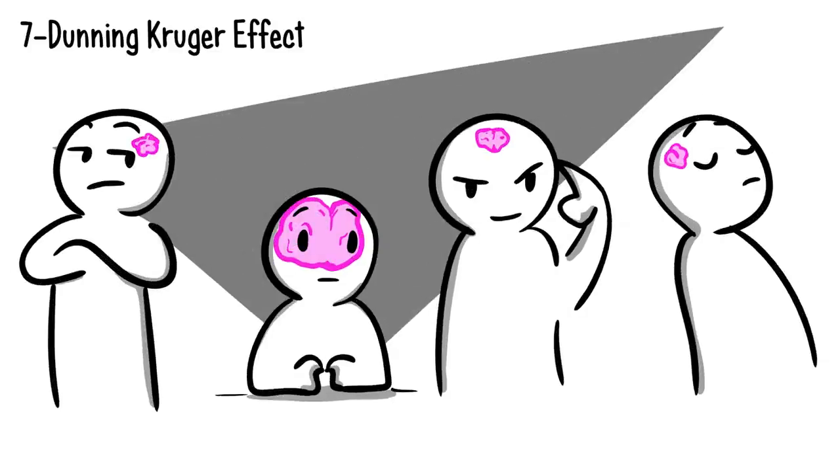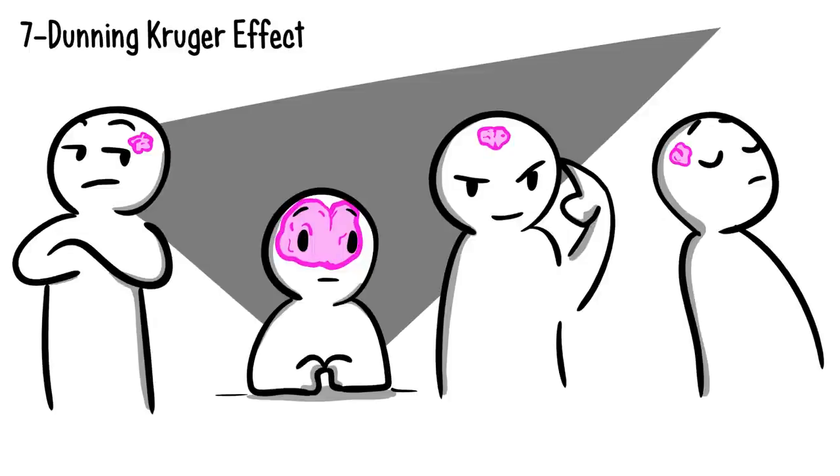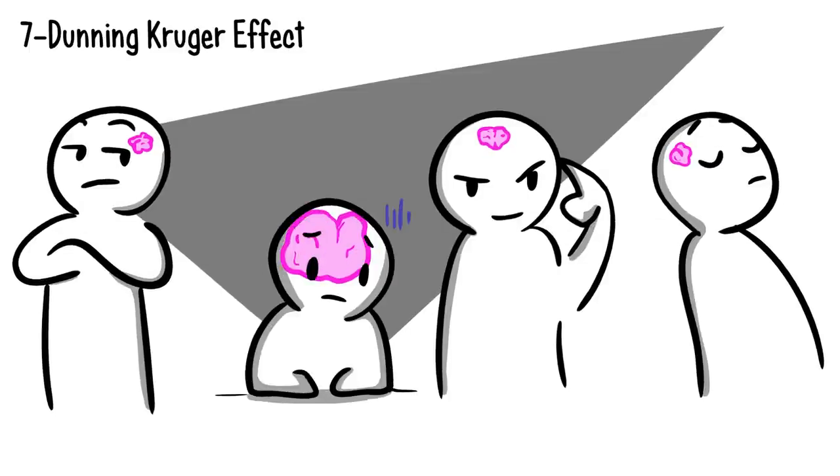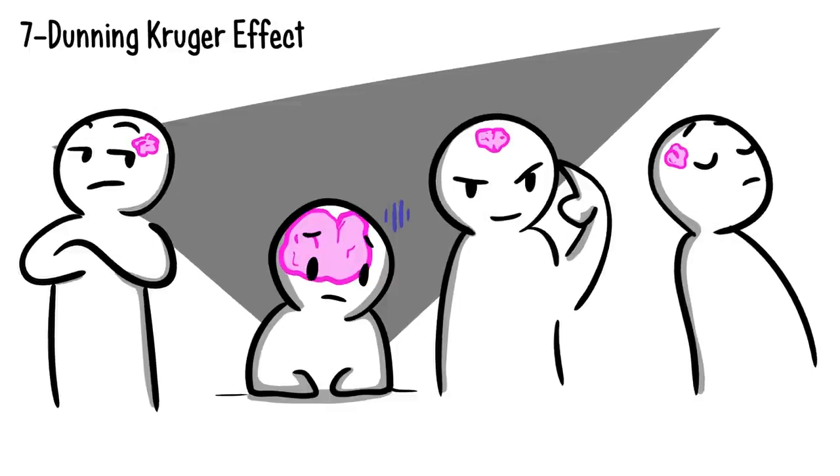Fact number seven: Dunning-Kruger effect. Did you know that intelligent people tend to underestimate their intellect? This is called the Dunning-Kruger effect. This is a phenomenon that occurs when people fail to appropriately evaluate their capacity to do things, therefore minimizing their potential.